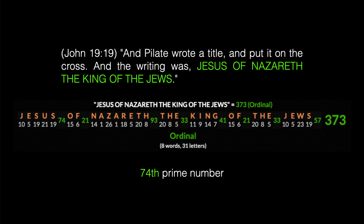Let's go to John 19:19 where the final superscription of the cross is: 'And Pilate wrote a title and put it on the cross and the writing was Jesus of Nazareth, the King of the Jews.' The phrase 'Jesus of Nazareth, the King of the Jews' has a value of 373, which is the 74th prime number, and also the value of the Greek word logos — meaning 'word' — 'In the beginning was the logos.'